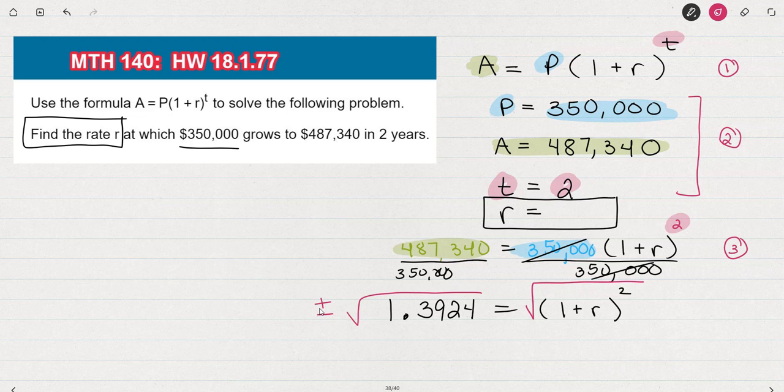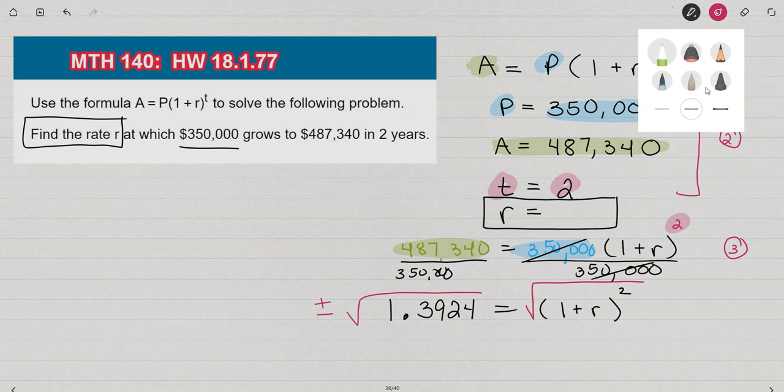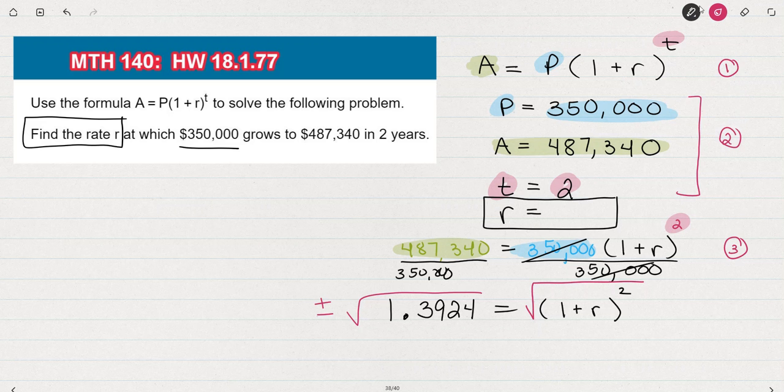So we'd have the square root of 1 plus R quantity squared is equal to the positive or negative square root of 1.3924. Now what happens here on the right is that this square and square root undo each other. So on the right, I'm just left with 1 plus R because the square and square root cancel each other out. And on the left, I've got that plus or minus the square root.